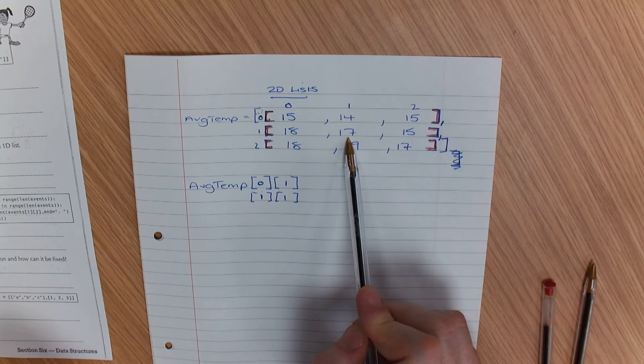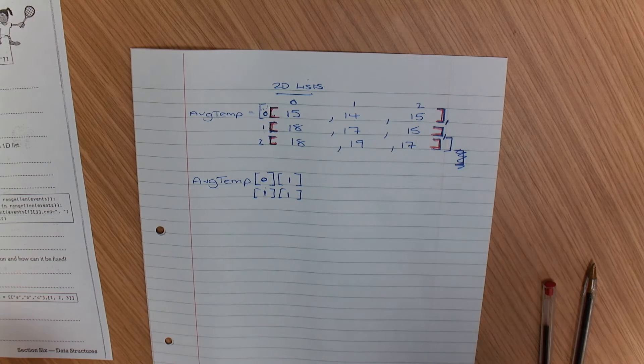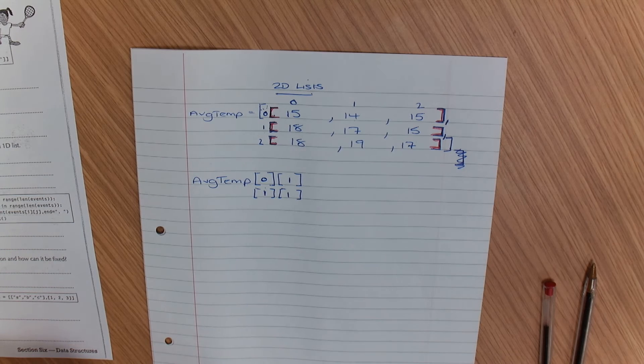Now, what I want to show you - this is called nesting. I'm going to show you how you can nest two loops within each other to find the values. Or if I wanted to work out the grand total of all these temperatures that are in the table. So what I would do